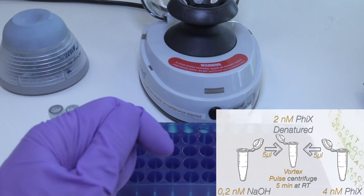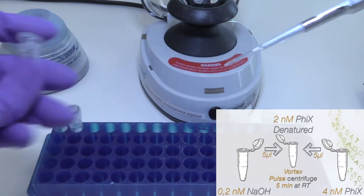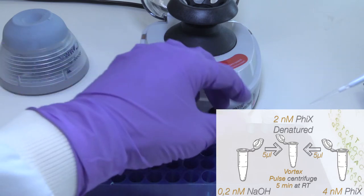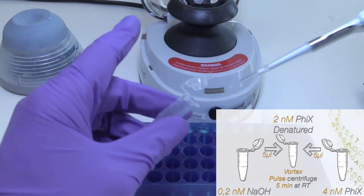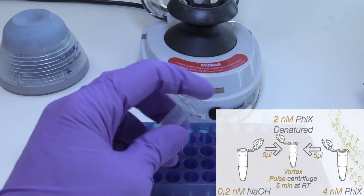Next up, denaturing the Phi-X. Combine the following volumes in a microcentrifuge tube: 5 microliters of 4 nanomolar Phi-X and 5 microliters of freshly diluted NaOH.